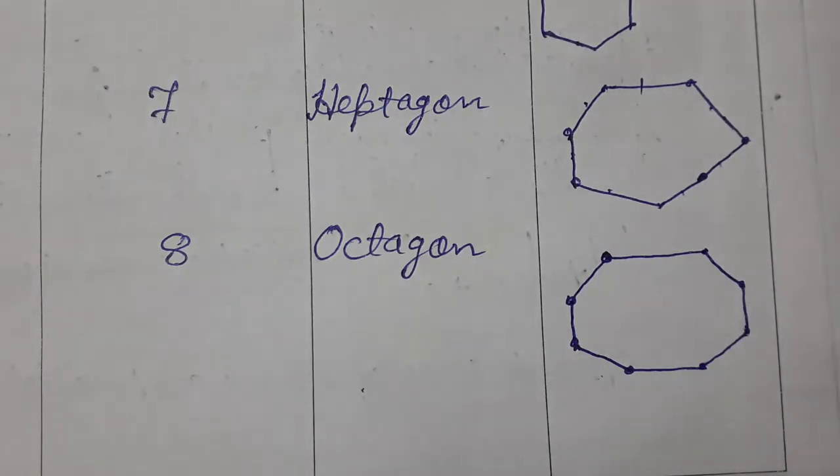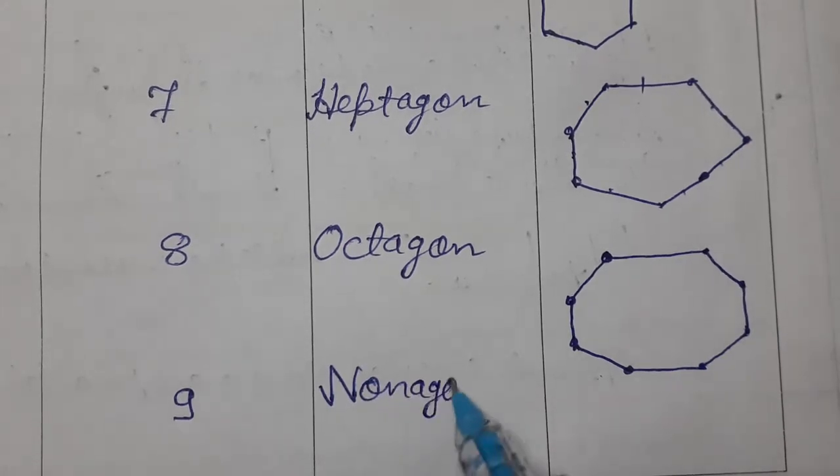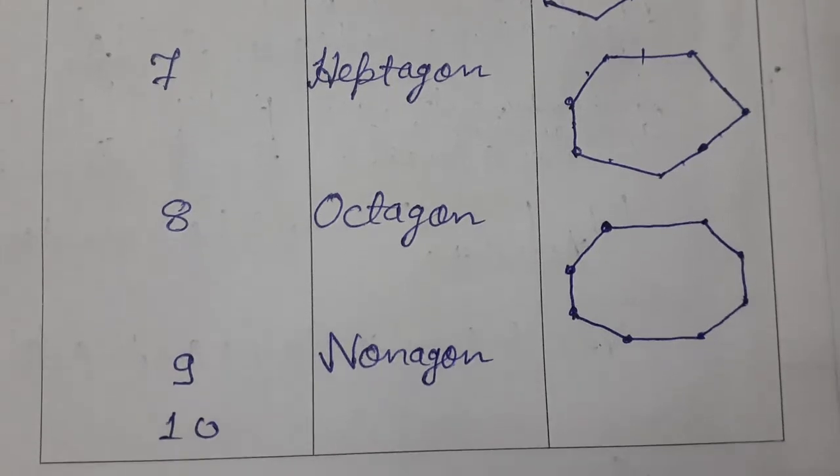Similarly, 9 sides is nonagon. Will not make figure. Nine sides, nonagon. And if it contains 10 sides, it is called decagon.